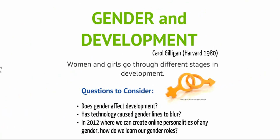Thinking back to all the theorists discussed in this video, you might notice that they're all male. We haven't taken a look at gender and development — we will do so in a complete module later in the course. But it's important to look at the work of Carol Gilligan from Harvard, who wrote the text 'In a Different Voice.' She argued that women and girls go through very different stages in development than the ones Piaget, Erickson, or Levinson might have suggested. Women tend to be concerned with making connections to others; they're more interdependent, and gender differences affect moral development differently in boys and girls. She talked about women needing the three C's of caring, connectedness, and community. Questions to consider: does gender affect development? Has technology caused our gender lines to blur? And in a world where we can create online personalities of any gender and live in the world of avatars, how do we learn our gender roles?